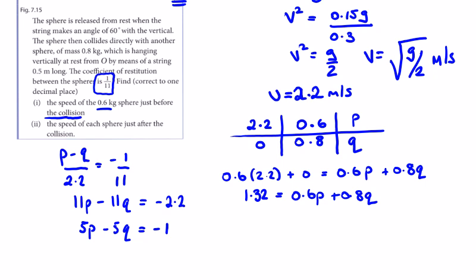Multiplying gives 8.25 equals 3.75p plus 5q. Bringing the other equation across: -1 equals 5p - 5q.